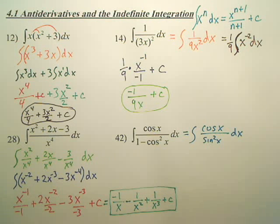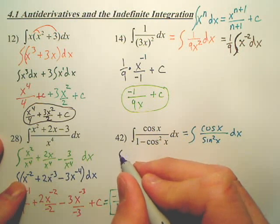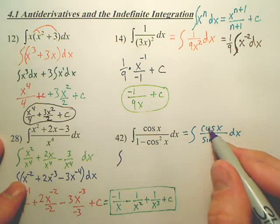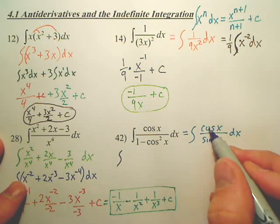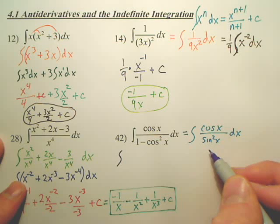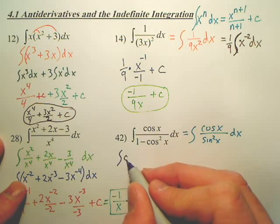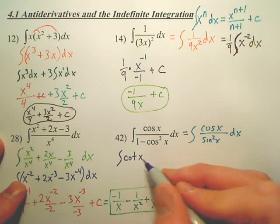Now, next, from there, you can rewrite that as the integral. Isn't that, technically, going to be, what's cosine over sine? Isn't that cotangent x?